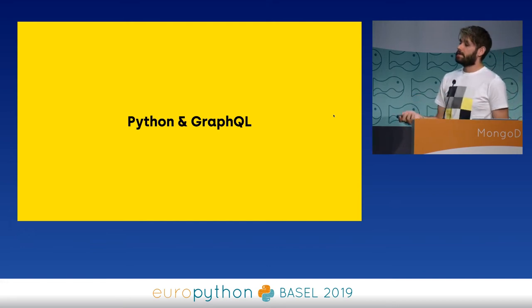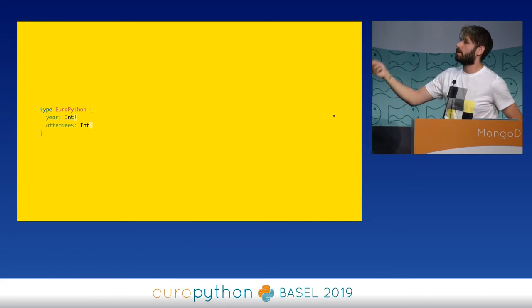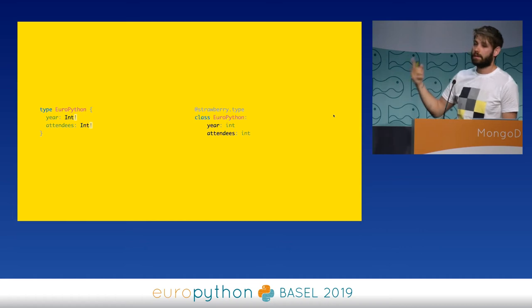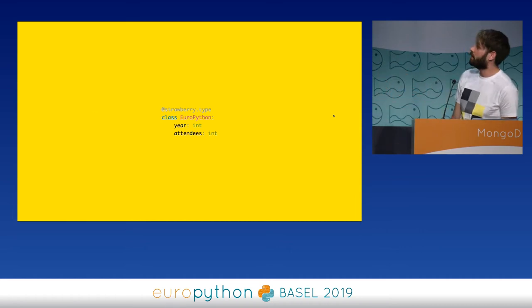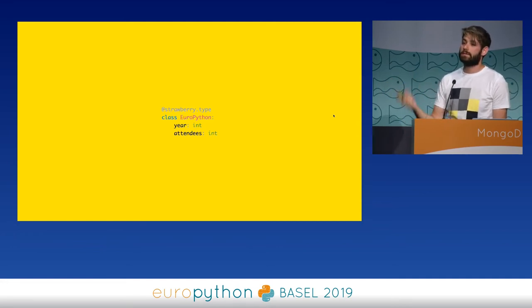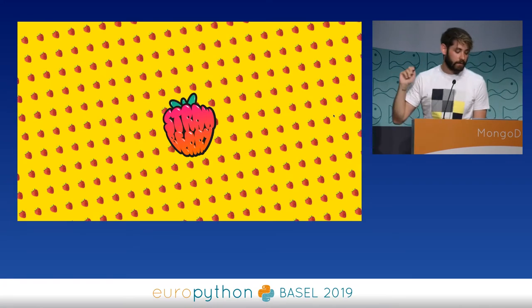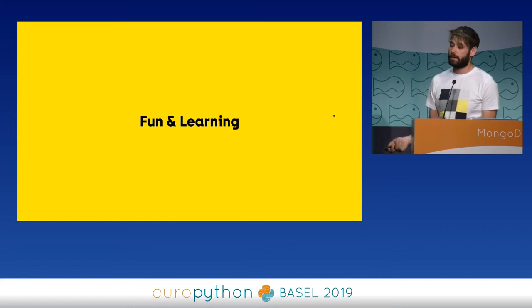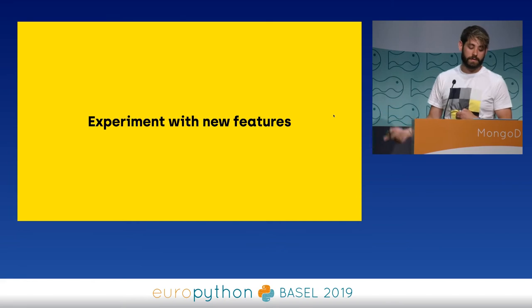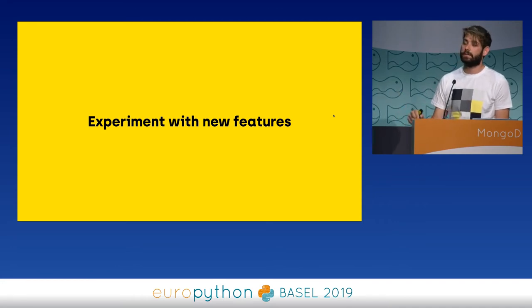Python and GraphQL go well together. If you look at a data class, it kind of looks like a GraphQL type — you have the same class called EuroPython with two fields and their types. So I created a library called Strawberry, where you use a decorator called strawberry.type, which does what data classes does — it actually uses data classes under the hood — but it also creates a GraphQL type, so you can use this to create a server based on that. The reason I created it is mainly to have fun, learn, and experiment with creating a new library and thinking about how people could use it.